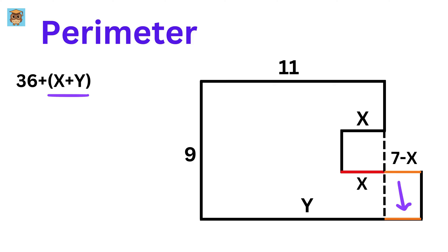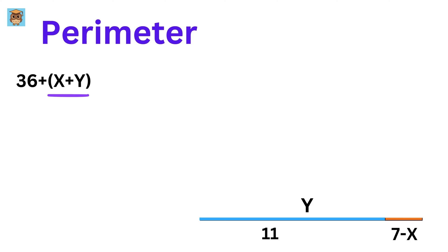Therefore, this side length will also be equal to 7 minus X. Now, this side has a length of 11 units, so this will also be equal to 11. Thus, this entire length will be equal to 11 plus 7 minus X, or 18 minus X, but it is also equal to Y. So, we get 18 minus X equals Y, and if we take X to this side, we have X plus Y equals 18.